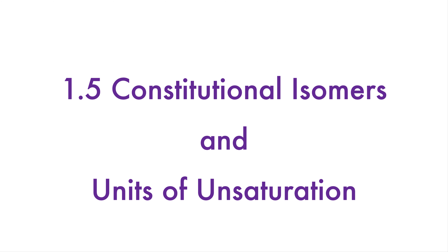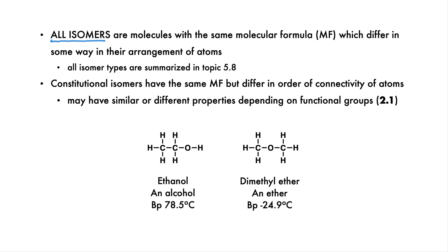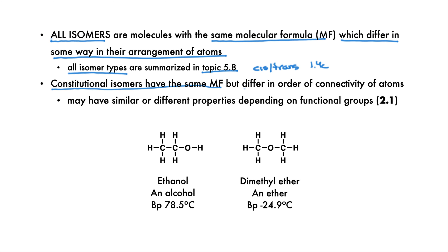Doing the problems in this unit will help you practice generating and drawing correct structures. First, let's learn to derive constitutional isomers when we are given a molecular formula. All isomers are molecules with the same molecular formula, MF for short, but which in some way differ in their arrangement of atoms. All the types of isomers are summarized in Topic 5.8. We have already discussed cis-trans isomers in Section 1.4c. Constitutional isomers have the same molecular formula, but a different order of connectivity of atoms. They may be very similar or very different in physical properties depending on the functional groups present. We'll discuss functional groups in Topic 2.1.